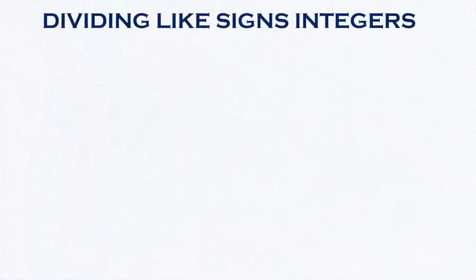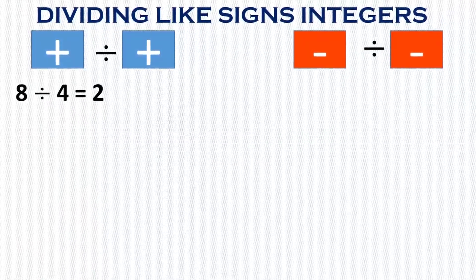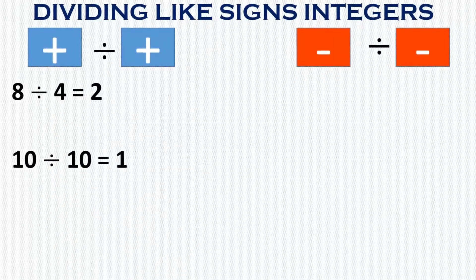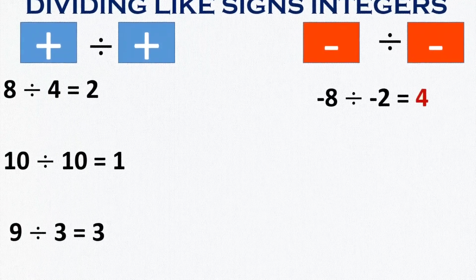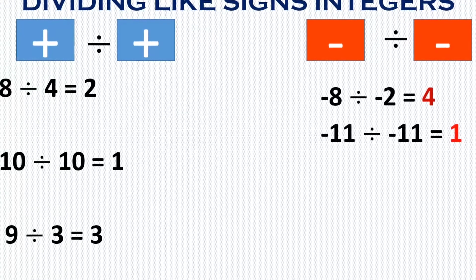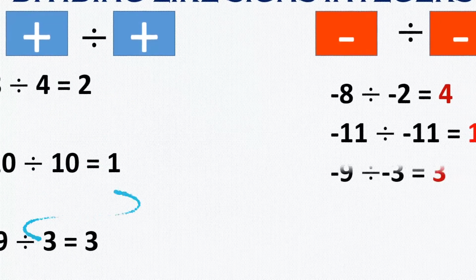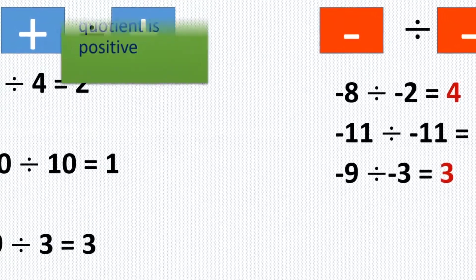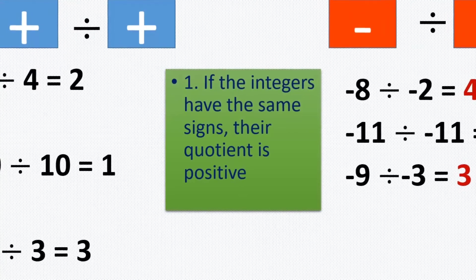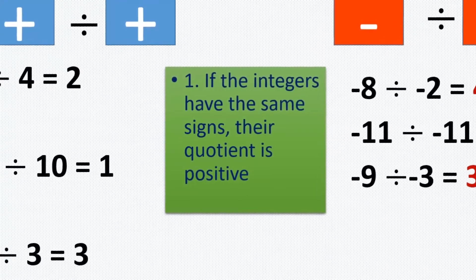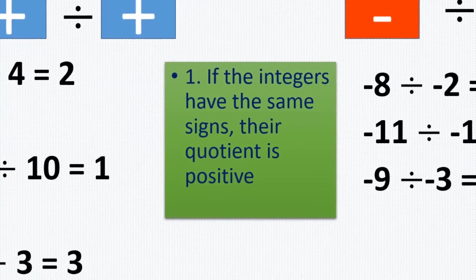In dividing integers, the concept is the same as in multiplying integers. If we are dividing a pair of positive numbers or a pair of negative numbers, the quotient is always positive. For example: 8 divided by 4 is 2, 10 divided by 10 is 1, and 9 divided by 3 is positive 3. Negative 8 divided by negative 2 is also positive 4, negative 11 divided by negative 11 is positive 1, and negative 9 divided by negative 3 is positive 3. So again, in dividing integers, if we have the same sign, the quotient is always positive.